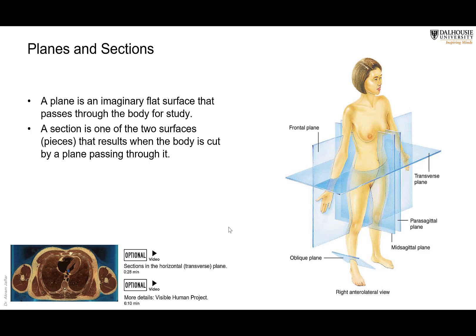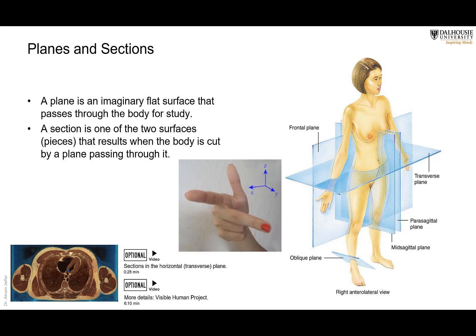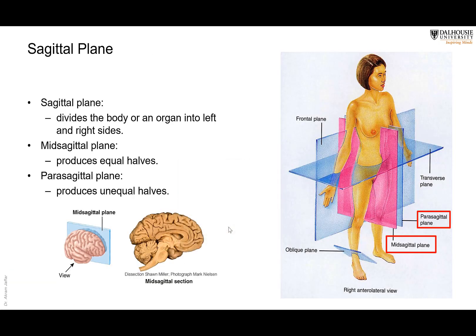We have planes and sections. We use three planes to section the body, and these planes are perpendicular to each other. We have the sagittal plane, which divides the body into right and left sides. Then the coronal plane, or frontal plane, which divides the body into posterior and anterior. Then the horizontal plane, which divides the body into upper and lower parts. If the sagittal plane is exactly in the midline, it is called the median plane, dividing the body into two equal halves. If slightly off the midline, it is a parasagittal or sagittal plane.